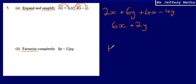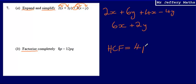To do this, I'm going to start by finding the highest common factor of my expression. I'll look at the numbers first: I've got 8 and 12. The highest common factor of 8 and 12 is 4. Then looking at the letters in each term, I can see that I've got a p in both of them, so they both have p in common. I can add that to my highest common factor, so the highest common factor is 4p.